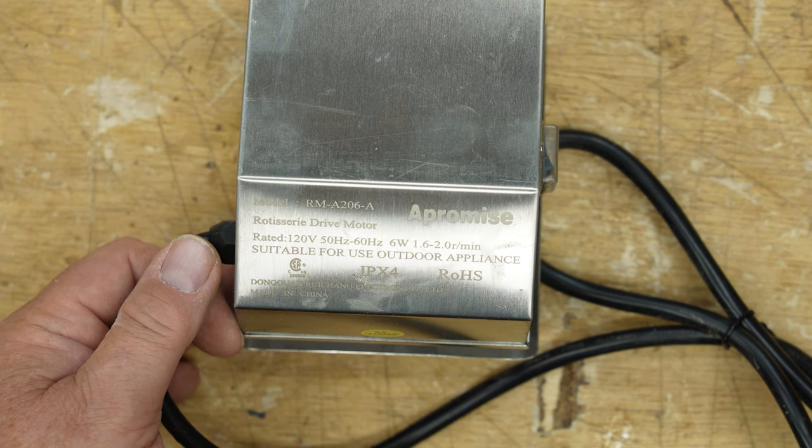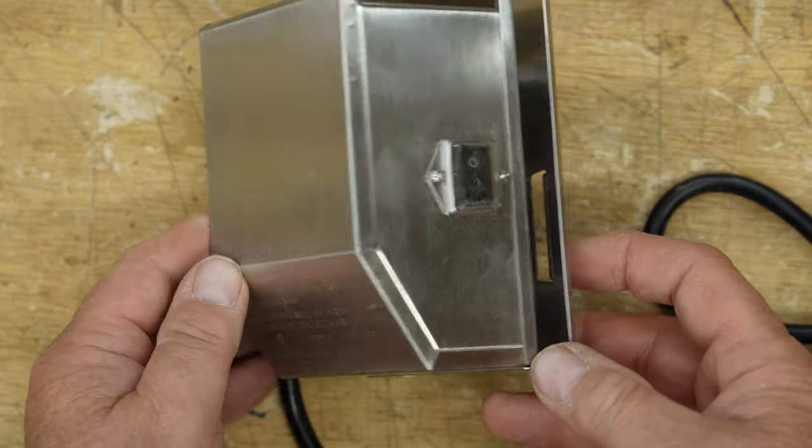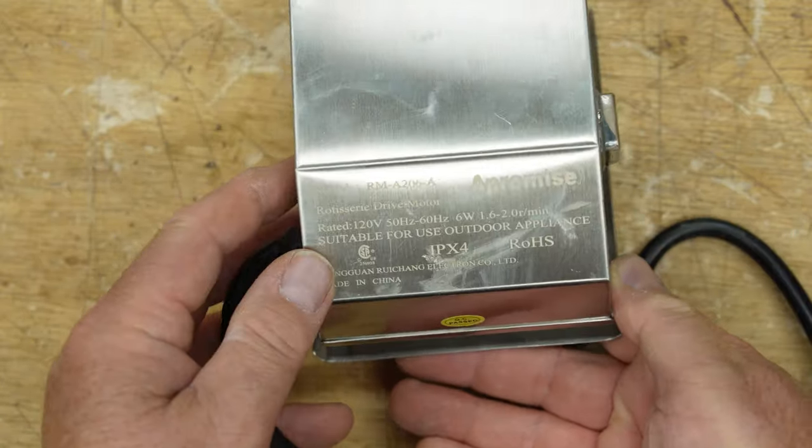Now this is a 110 volt barbecue rotisserie motor. Get these on Amazon. I don't know whether they're still in stock or not, but check them out on Amazon. The name is Apromise.